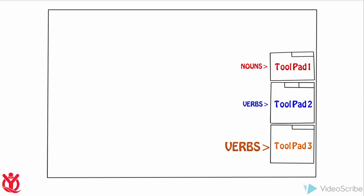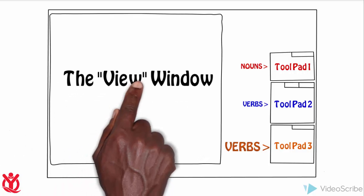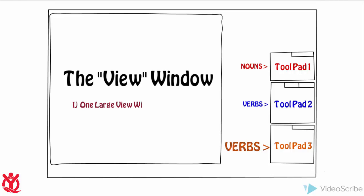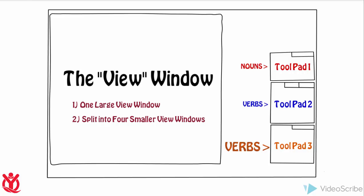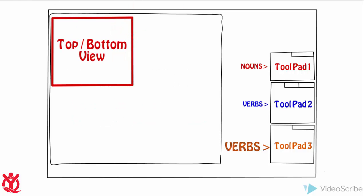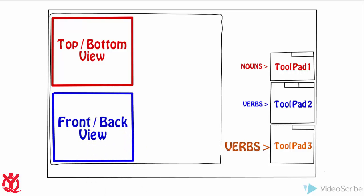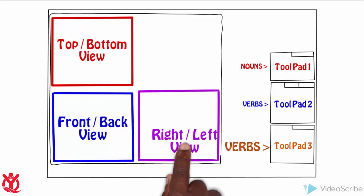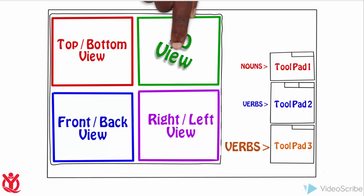We also need to be able to see our creations. We do this in the view window. We can choose to use one large view window or it can be split into four smaller view windows. When split, the top left window shows the top or bottom view. The bottom left window shows the front or back view. The bottom right window shows the right or left view. And the top right window shows the very important 3D view.